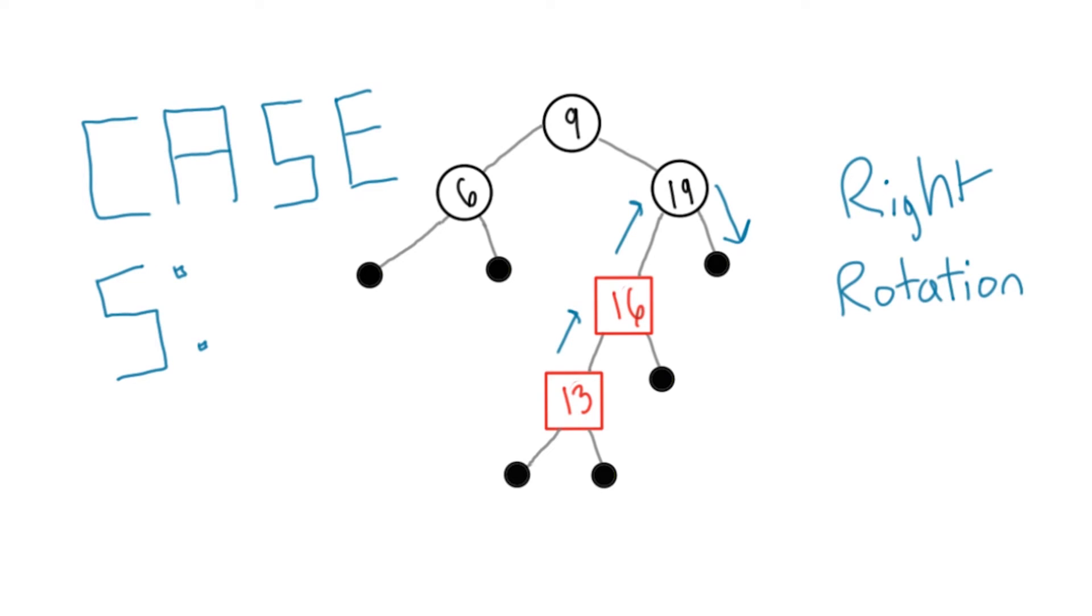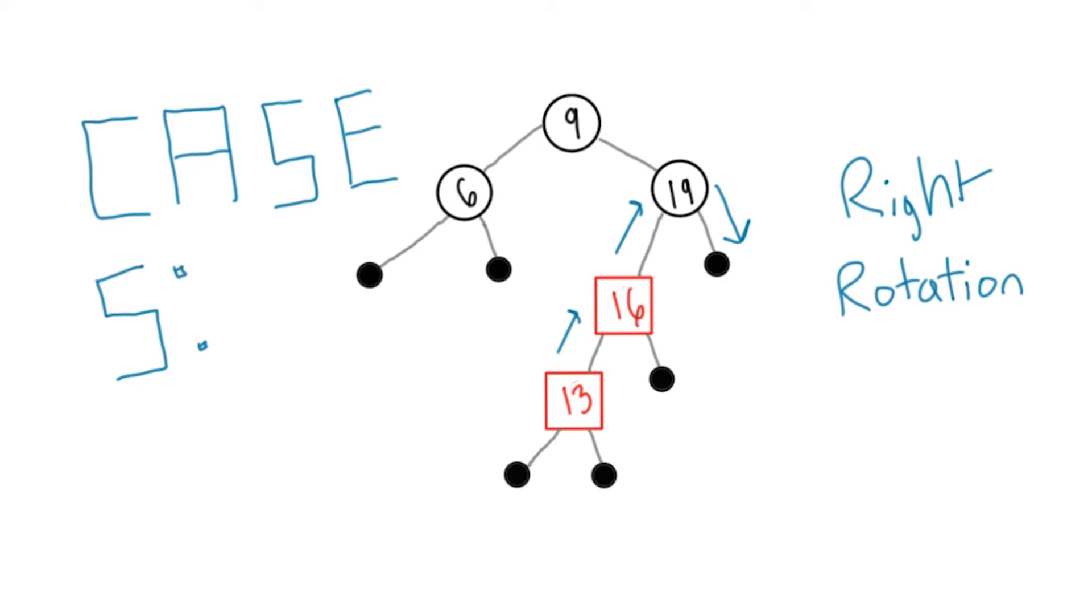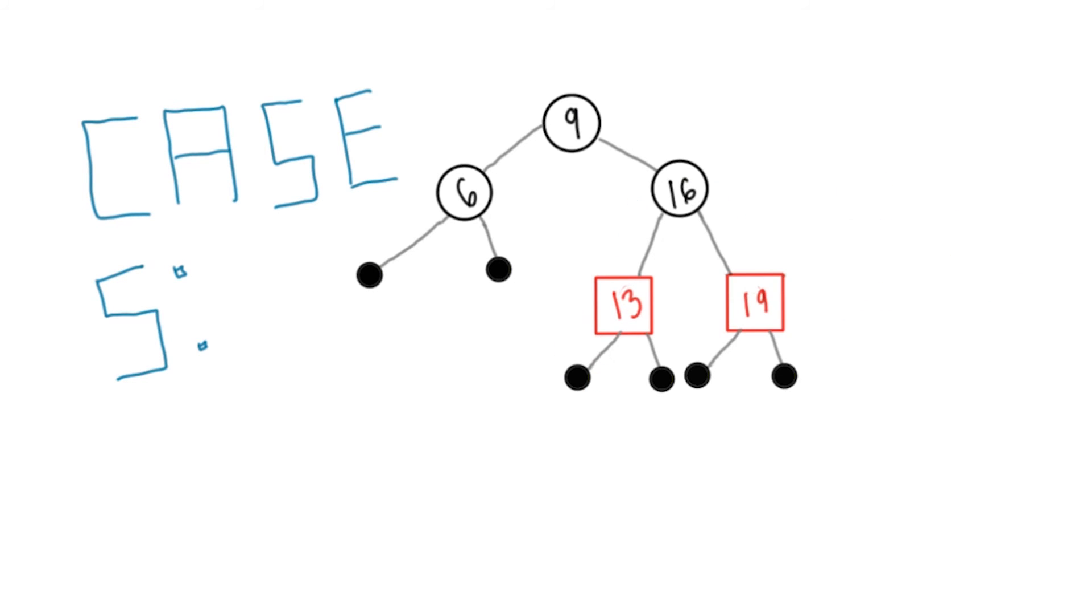We'll do a right rotation here, but this time involving the grandparent and both of its children. We need to swap the colors of these two nodes as well. Ta-da!